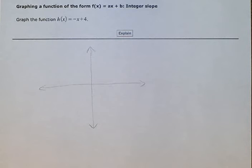Graphing a function of the form f(x) = ax + b: integer slope. Graph the function h(x) = -x + 4.